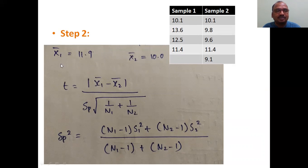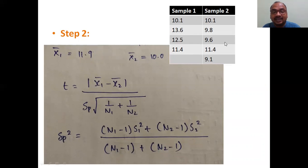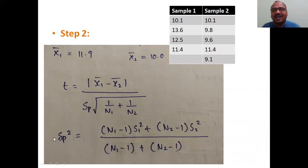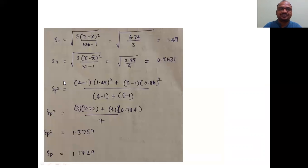This is the t-value formula. We know x̄₁ and x̄₂. n₁ is the number of values in the first group: 1, 2, 3, 4 — so n₁ = 4. n₂ is the number of values in the second group: 1, 2, 3, 4, 5 — so n₂ = 5. We still need the Sp value. We calculate Sp² first, then Sp, then the t-value. S₁ is calculated from each value minus the group mean.